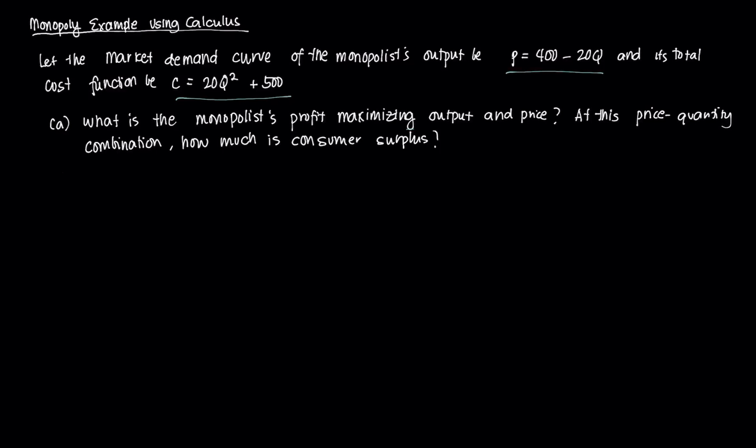The first order of business: what is the monopolist's profit-maximizing output and price? We're going to need to use the relevant first order condition, but the question also asks at this particular combination what is the consumer surplus, which is a key welfare indicator as we were talking about in the last few videos.